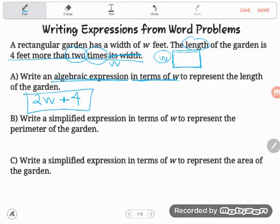Let's look at two other ways the GED could use the same information. They might tell you to write a simplified expression in terms of W to represent the perimeter of the garden. One of the things they love to do with rectangular shaped things is perimeter. So let me go ahead and finish drawing that picture. So this is W and then we said the length is 2W plus 4.